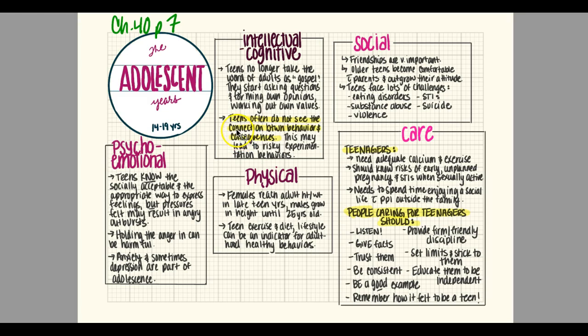The next stage is the adolescent years. For psycho-emotional development, teens know the socially acceptable way to express their feelings, but the pressures they feel may result in angry outbursts — and unfortunately parents usually get the brunt of that. Thankfully most teens reserve it for home. Holding anger in can be harmful, so it's good they get it out. Anxiety and sometimes depression are a pretty common part of adolescence.